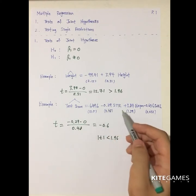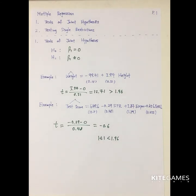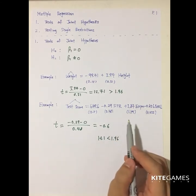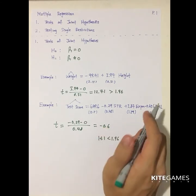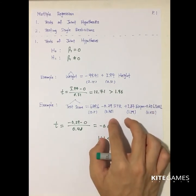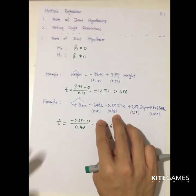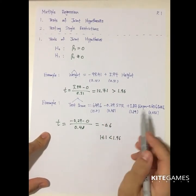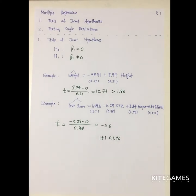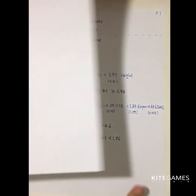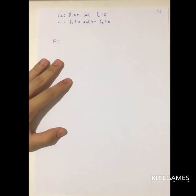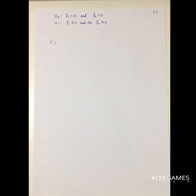The answer is maybe. Because in multiple regression, you need to think about all the variables as a whole. That means you need to consider whether maybe these two together are significant or these three together are significant — you cannot just ignore either one of them. Therefore, you need to do hypothesis testing for the joint hypothesis. In multiple regressions, you need to do the so-called F-test to see whether they are significant or not.